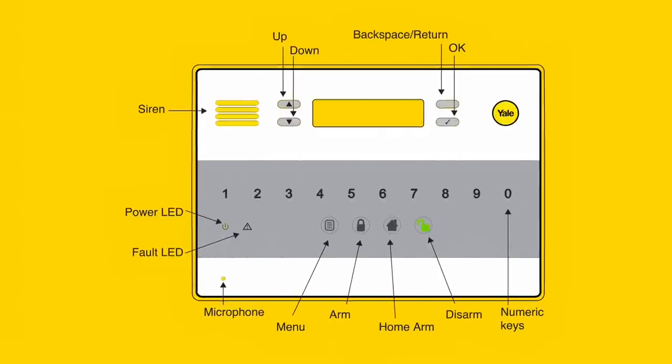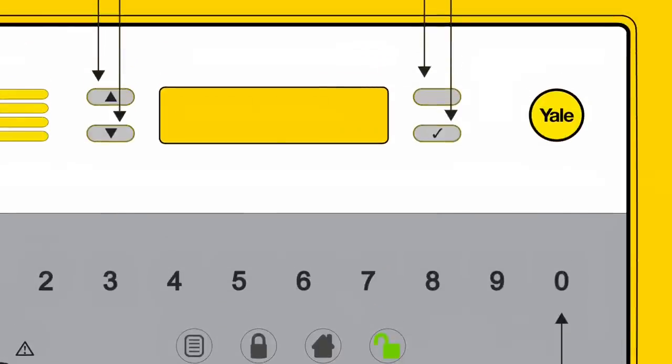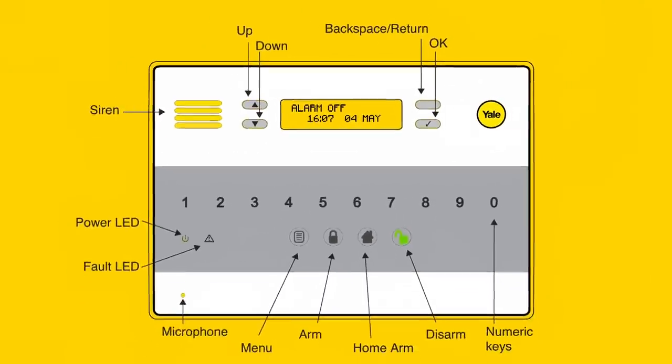Press the green disarm button on the control panel and enter the pin that you previously defined. The screen will now tell you that the alarm is off. Leave this message on the screen.